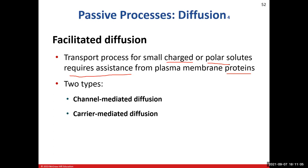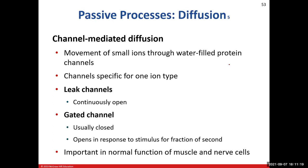There are two types of facilitated diffusion: channel-mediated diffusion and carrier-mediated diffusion. Channel-mediated diffusion involves a channel protein with a water-filled tunnel or passageway through the middle that allows the movement of small ions. These channels are specific — for example, a voltage-gated sodium ion channel only allows sodium to move through it, and a voltage-gated potassium channel only allows potassium.